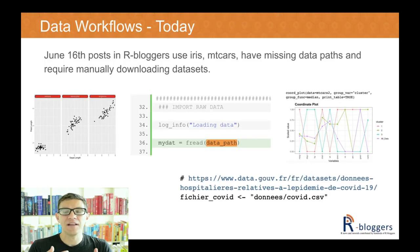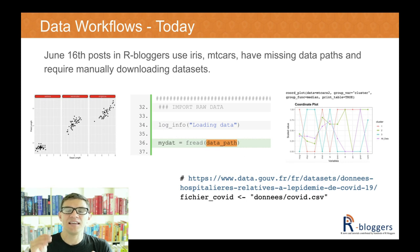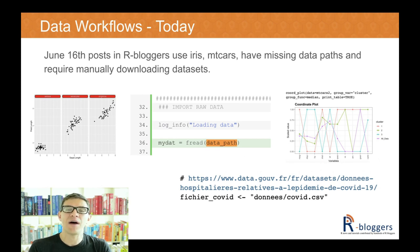A lot of the common anti-patterns I've seen when using datasets fall into two categories. The first is we overuse iris and mtcars because it's just hard to get data, so we fall back to the easiest datasets to use. The other is that a lot of times we don't include our dataset in the code we're trying to share or reproduce. You can see examples from bloggers where the dataset is missing or requires manual steps to download it, which creates friction and ultimately leaves code that is broken.